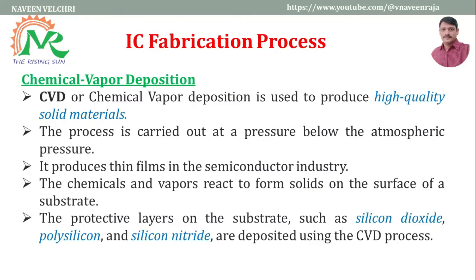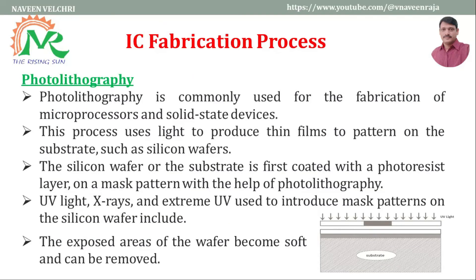The fifth step is Chemical Vapor Deposition, simply called the CVD process. It is used to produce high-quality solid materials. The process is carried out at a pressure below atmospheric pressure and produces thin films for the semiconductor industry. Chemicals and vapors react to form solids on the surface of the substrate. Protective layers such as silicon dioxide, polysilicon, and silicon nitride are all deposited using the CVD process.